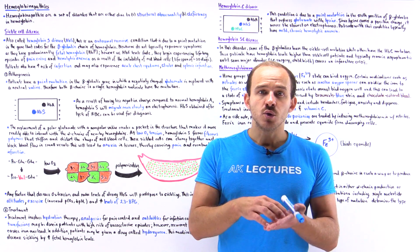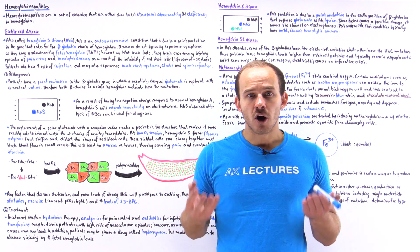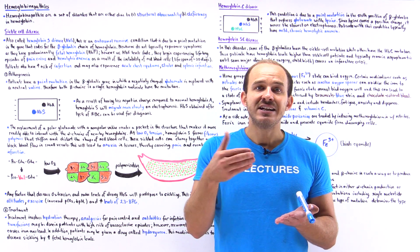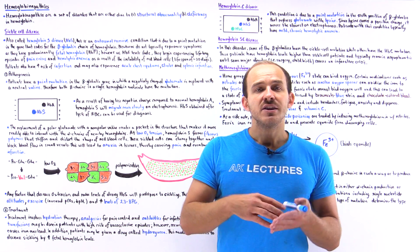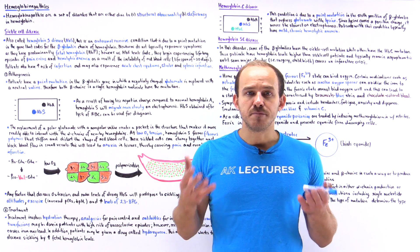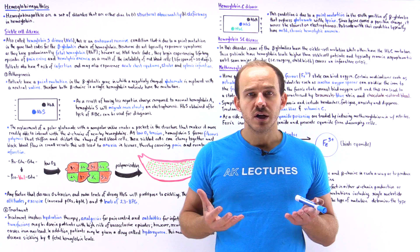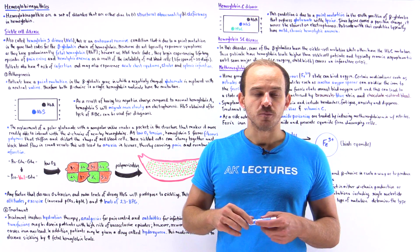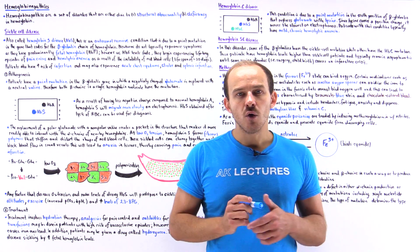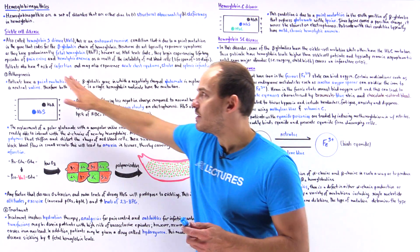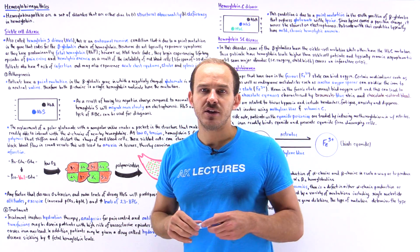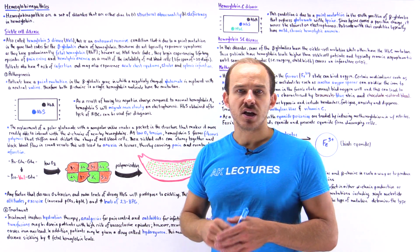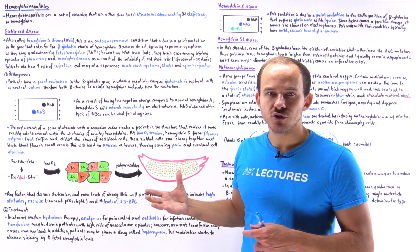These patients also eventually develop splenic infarction, which causes increased risk of infections. They may also experience stroke as well as acute chest syndrome. Before we talk about why they develop these pain crises, let's talk about the pathogenesis of this condition.